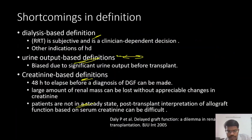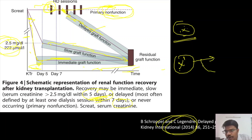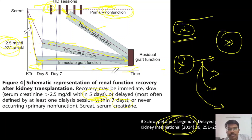The risk factors for delayed graft function and its management are also part of this topic but are beyond the scope of this video. This video was made to clear the definition of delayed graft function. Remember this graph to understand the four categories: immediate graft function, slow graft function, delayed graft function, and primary non-function. Very, very important.